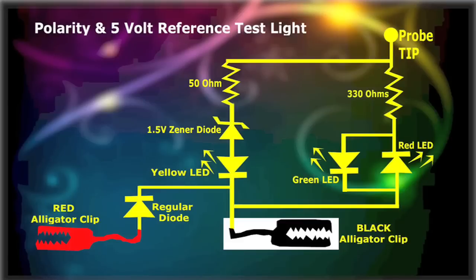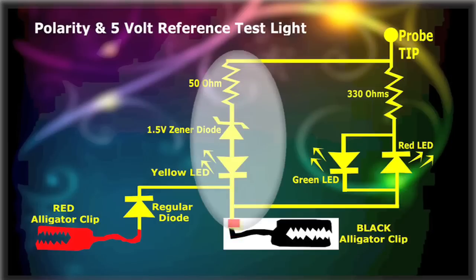In the diagram, we see at the 5V Reference side of the circuit, that current flows from the black alligator terminal, through the yellow 5V LED, through the 1.5V Zener diode, the 50 ohm resistor, and finally to the tip of the probe, which could be the ECM provided 5V Reference.